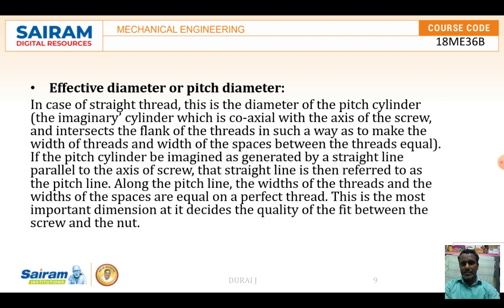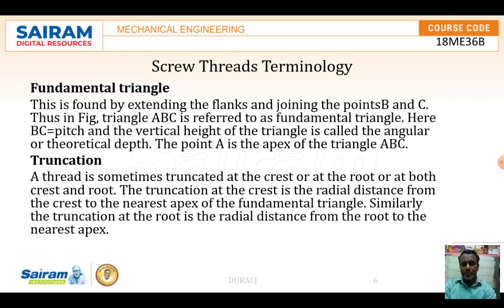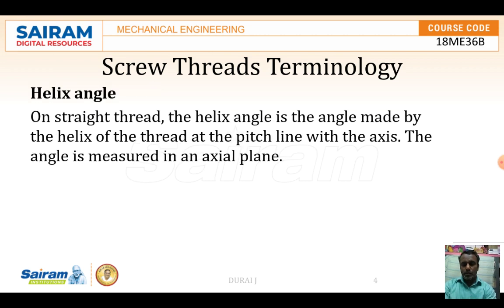If the pitch cylinder is imagined as generated by a straight line parallel to the axis of the screw, that straight line is referred to as the pitch line. Along the pitch line, the width of the thread and the width of the space are equal for a perfect thread. This is the most important dimension as it decides the quality of fit between the threads.